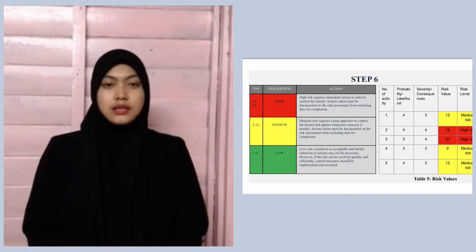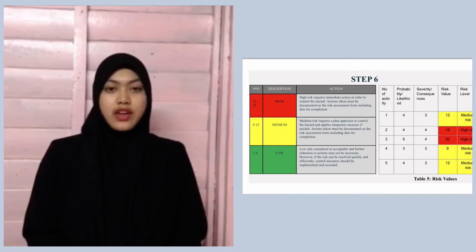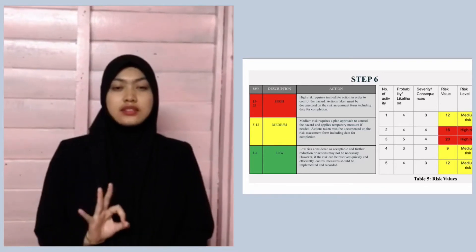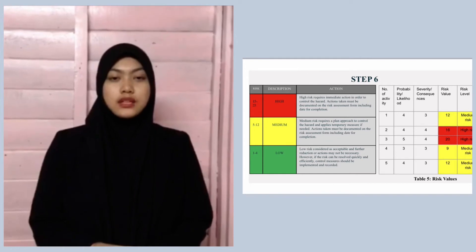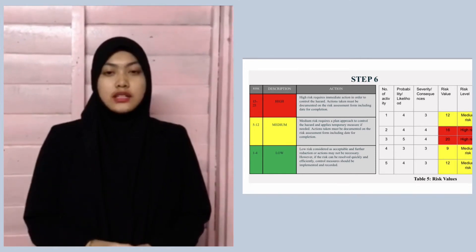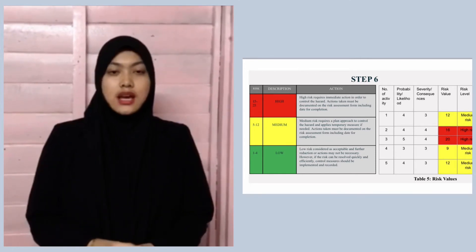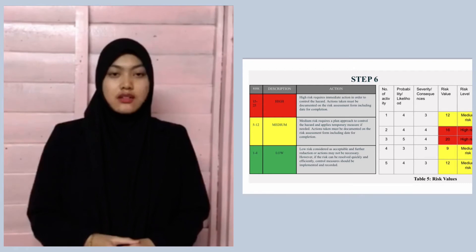Table five shows the risk value. There are three levels of risk — high, medium, and low — which are classified into the colors red, yellow, and blue respectively.